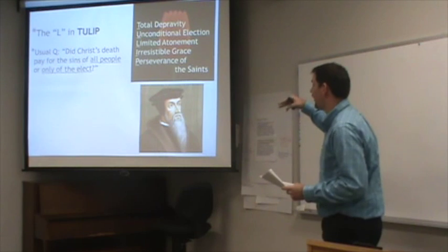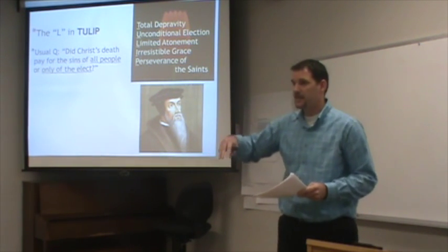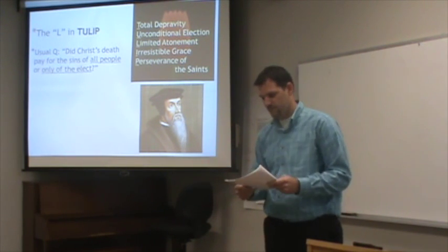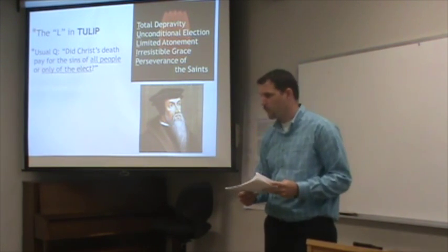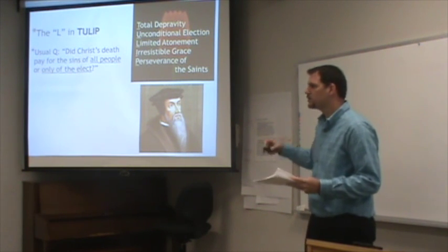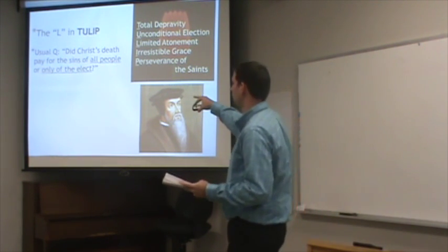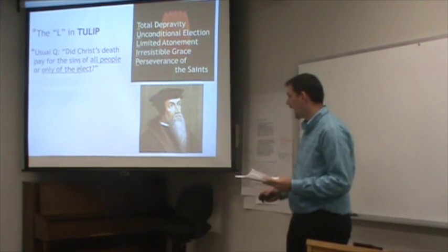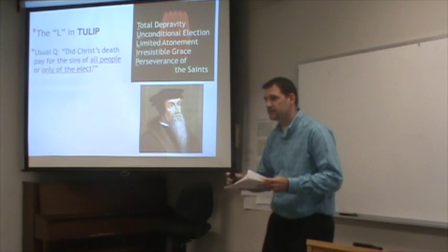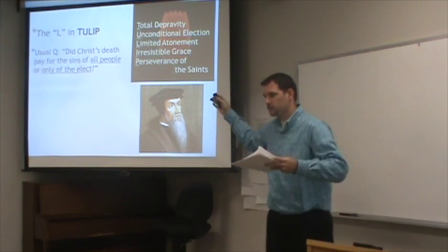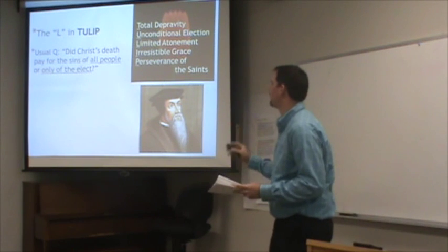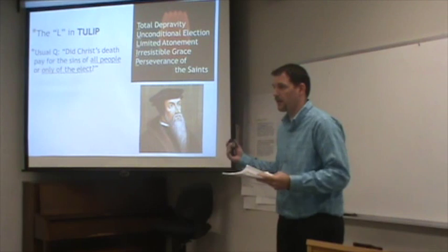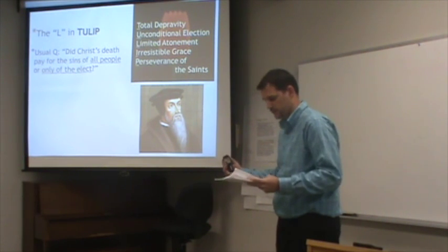These five points come out of the Synod of Dort, 1618 to 1619, after Calvin has already been dead, so it's really kind of mislabeled 'the five points of Calvinism.' The question for limited atonement is usually asked this way: did Christ's death pay for the sins of all people or only for the elect? I'm going to expand our question and address limited atonement differently, because that's not actually the most helpful framing used in the Reformation era.